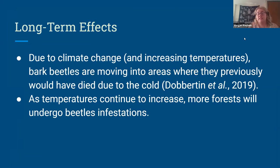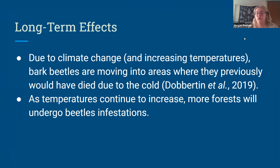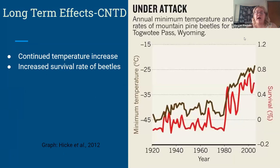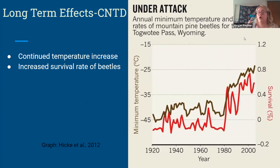What are the long-term effects? Due to climate change, increasing temperatures are occurring in certain areas, and therefore bark beetles are moving into areas where they previously would have died due to cold. As temperatures continue to increase, more forests will undergo beetle infestations. That is shown on this graph — as temperatures increase, the survival rate of beetles increases. The brown line represents minimal temperature and the red line represents survival rate of beetles. As temperature continues to increase, the survival rate of beetles will also increase.